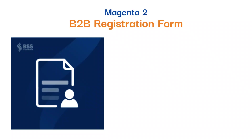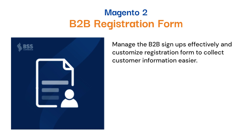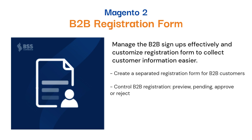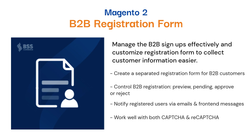Magento 2 B2B Registration Form. This module allows store owners to manage B2B sign-ups effectively and customize the registration form to collect customer information more easily. Create a separated registration form for B2B customers. Control B2B registration: preview, pending, approve, or reject. Notify registered users via emails and front-end messages. Works well with both CAPTCHA and ReCAPTCHA.